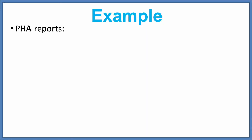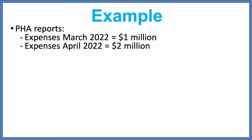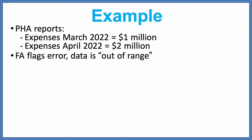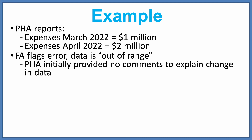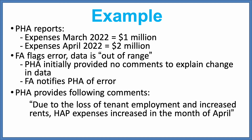In this example, the PHA reported total expenses of $1 million last month and $2 million this month. This would show up as an error — out of range. The FA would reach out to the PHA to notify them of this error and prompt them to provide comments explaining why there is a discrepancy. An example comment for this scenario might be: "Due to the loss of tenant employment and increased rents, HAP expenses increased."